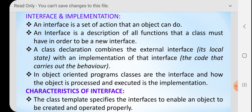Next we will move on to the next topic: interface and implementation. So what is interface and what is implementation? An interface is a set of actions that an object can do. The interface defines the actions, and the object is what carries out those actions. Interface and implementation are explained mainly through class and object. You have already learned about class and object in the last class, that is in your 11th standard, so I am going to recall that.